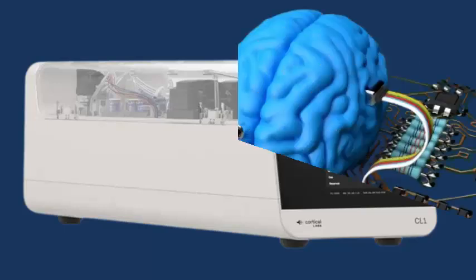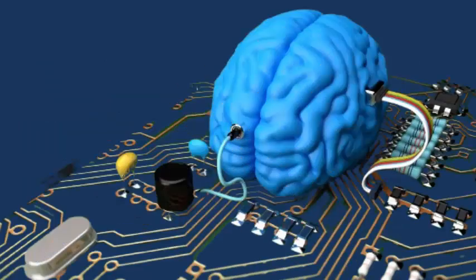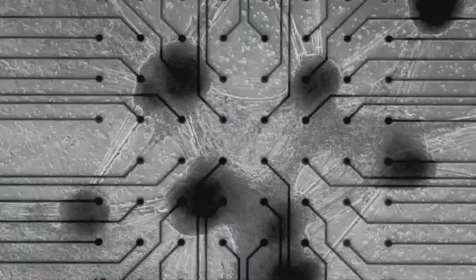A life support system maintains the neuron's viability for up to six months by regulating temperature, gas exchange, and nutrient flow.